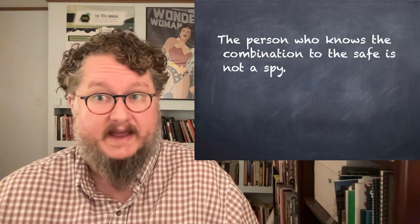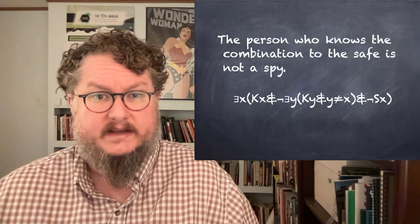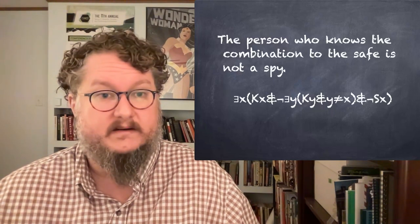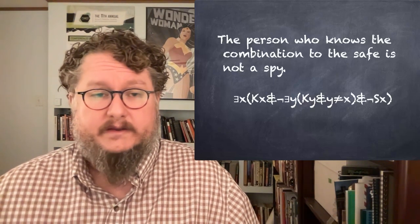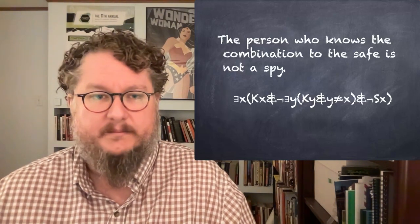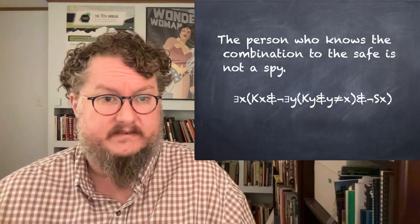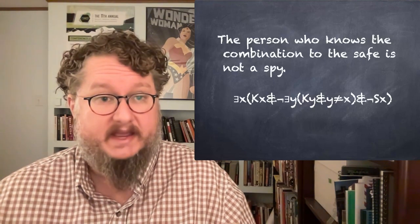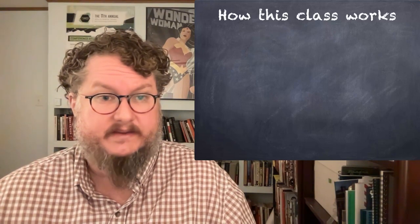One of the tools of formal logic is representing or translating claims in ordinary language into what we call a formal language that makes more clear the form or structure of the claim. We'll learn what the symbols I'm about to show you mean in future units, but we can translate claims like if God does not exist, then life is meaningless into a kind of schematic form. Here I'm using G to represent God and God exists and M to represent life is meaningless. And then the arrow indicates the if-then structure of the statement.